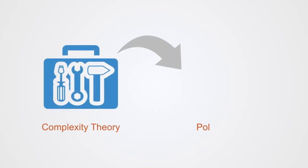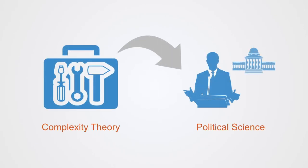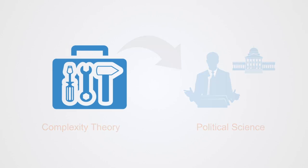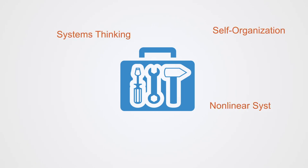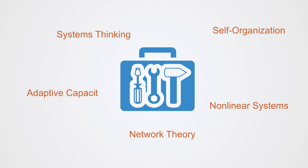This course explores how complexity theory can be applied to political science in order to develop such a vocabulary. It draws upon the central concepts and models from complexity theory, such as systems thinking, self-organization, non-linear systems, network theory, and adaptive capacity.